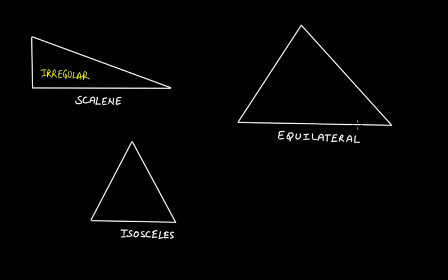This is an equilateral triangle. In an equilateral triangle all the sides are equal to each other, and all the internal angles are at 60 degrees. Therefore, an equilateral triangle is a regular polygon because it is equilateral as well as equiangular.